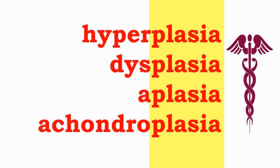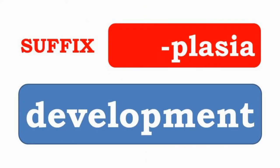Hyperplasia, dysplasia, aplasia, and achondroplasia have the suffix -plasia, which indicates formation or development.